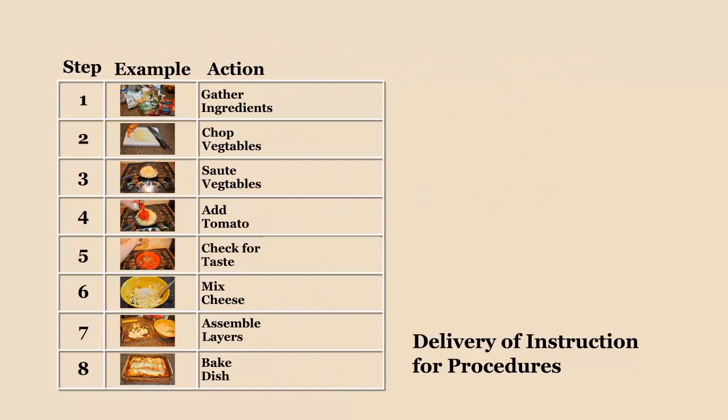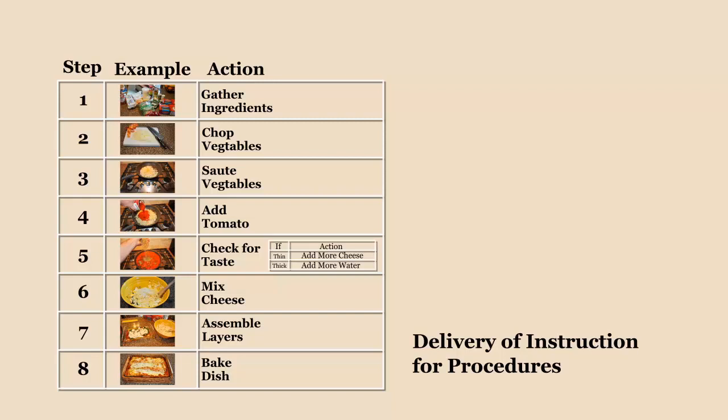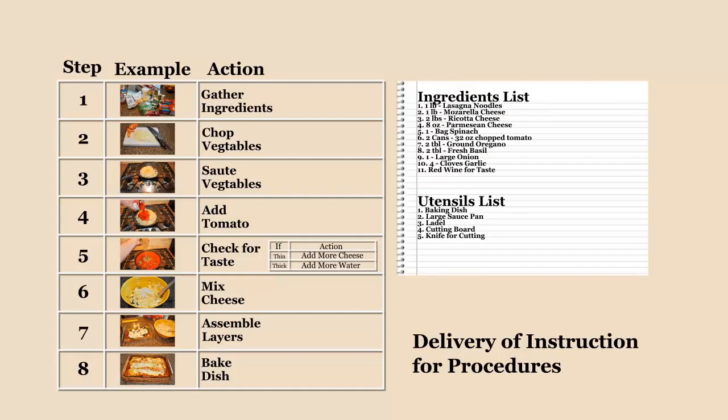Earlier we identified procedures as either linear procedures or decision procedures. When developing decision procedures, be sure to use decision tables. Decision tables come in an if-then-else format, and many designers provide flowcharts for the learners to follow. Decision tables are often embedded into action tables to show a consistent flow and presentation of the procedure. If your instruction uses a follow-along demonstration, be sure to provide a listing of the equipment and resources which will be needed or used to perform the procedure.